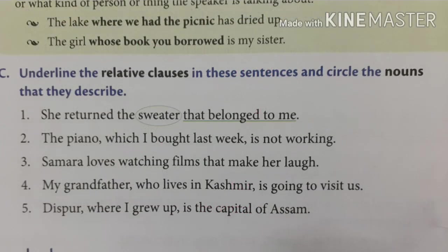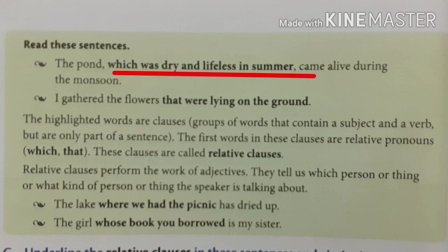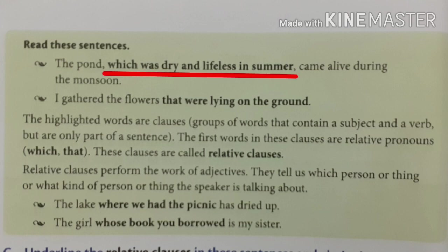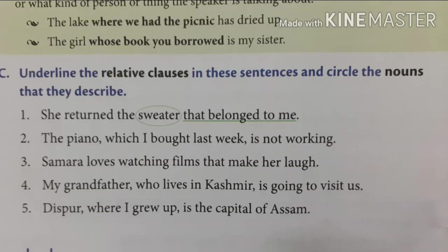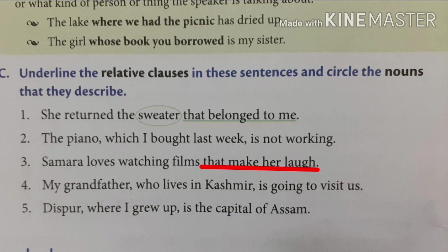Let's see the next exercise where you have to underline the relative clause. Before that — do you know what is a clause? A clause is a part of a sentence which starts with a relative pronoun. For example: 'The pond which was dry and lifeless in summer came alive during the monsoon.' The relative clause is 'which was dry and lifeless in summer.' Relative clauses are related to the main clause. First exercise: 'She returned the sweater that belonged to me.' The relative clause is 'that belonged to me.' Second: 'The piano which I bought last week is not working.' The relative clause is 'which I bought last week.' Third: 'Samara loves watching films that make her love.' The relative clause is 'that make her love.'